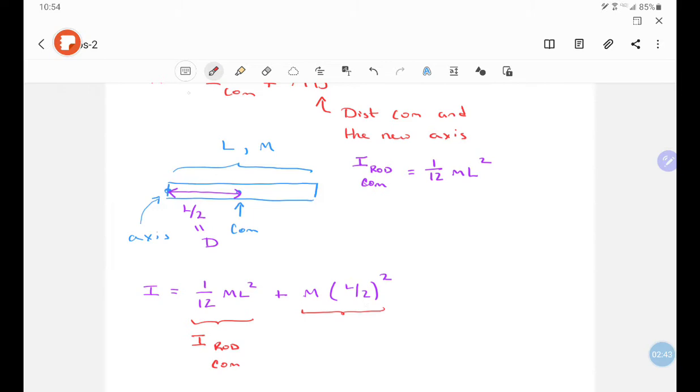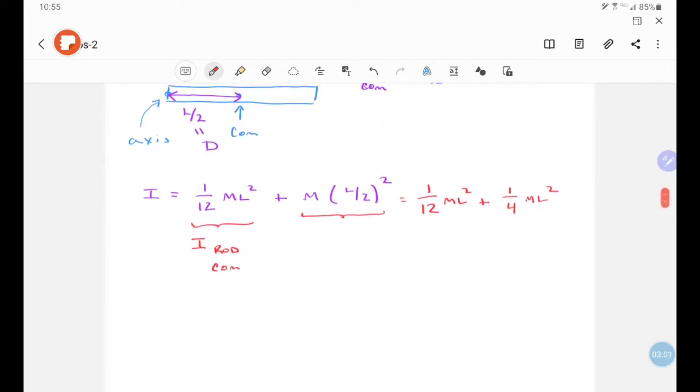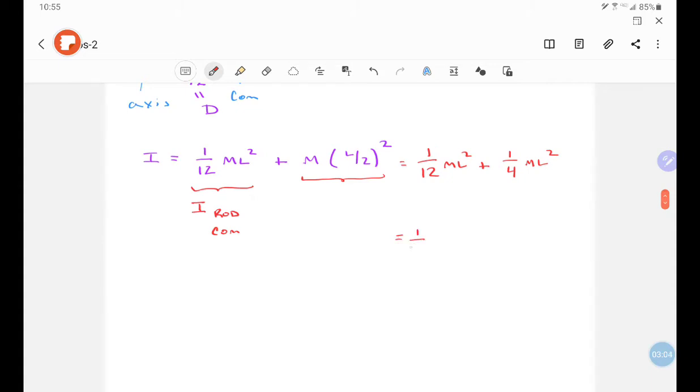So if I sum those, what we end up with is 1/12 ml squared plus, squaring that l over 2, I get 1/4 ml squared. In summing these we have 1/12 ml squared plus 3/12 ml squared, or 1/3 ml squared.